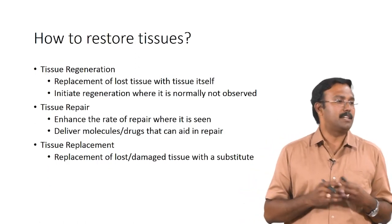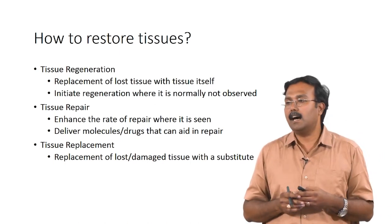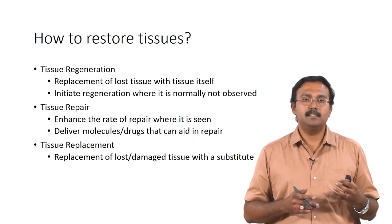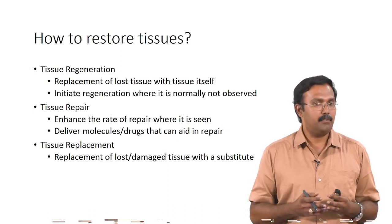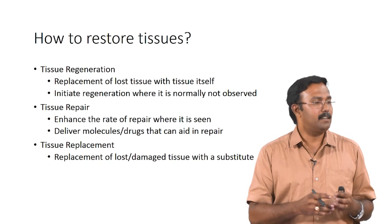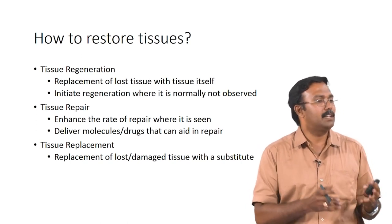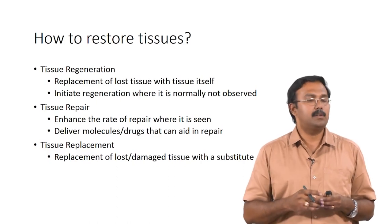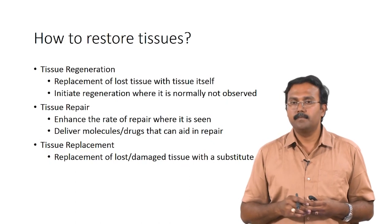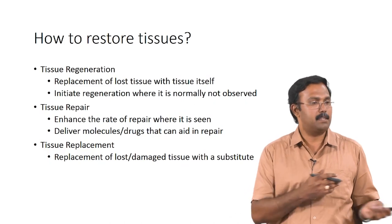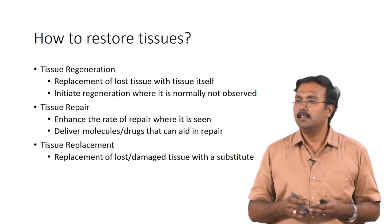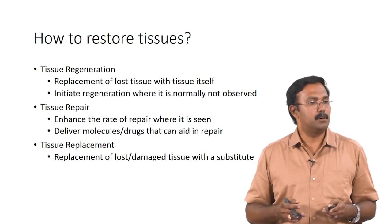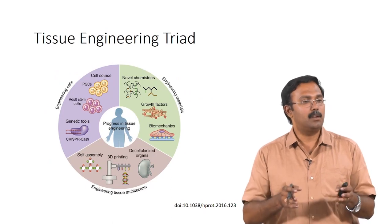The ultimate goal is to restore tissues. I like to call these the 3 R's of tissue restoration: tissue regeneration, repair, and replace. Regeneration is where you try to replace lost tissue and initiate regeneration where it would not normally occur, by providing support. Tissue repair involves enhancing the rate of repair where it is sometimes seen, or delivering molecules or drugs to aid repair. The last option is to replace — when all else fails, you take the tissue out and put in a new substitute, hoping it will perform the function the actual tissue was supposed to do.